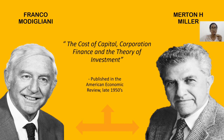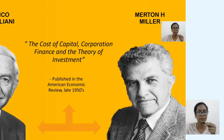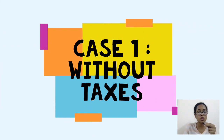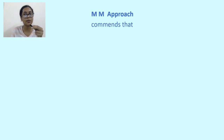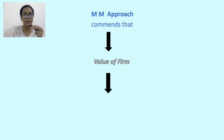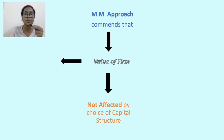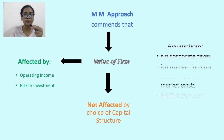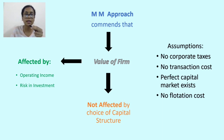The MM approach can be broadly discussed in two parts. Case 1 is the proposition without taxes. The MM approach advocates the irrelevancy of capital structure — the value of the firm is not dependent on the choice of capital structure; rather, it is affected by operating income and the risk involved in investment. This approach assumes there are no corporate taxes, transaction costs do not exist, a perfect capital market is prevalent, and there is no flotation cost.